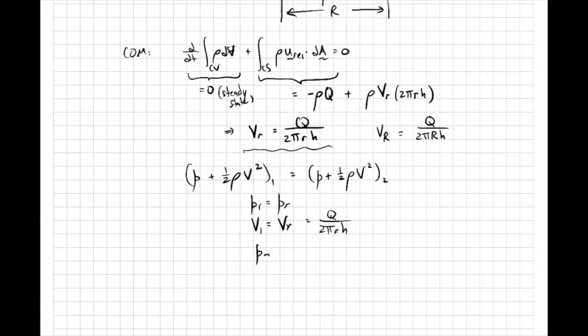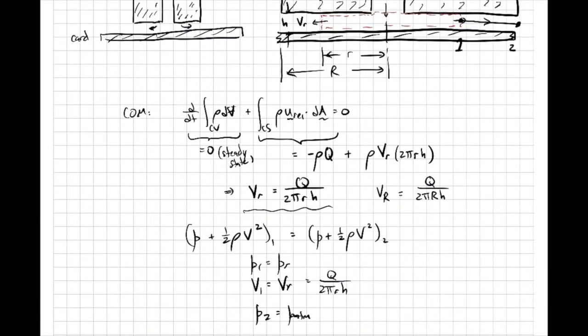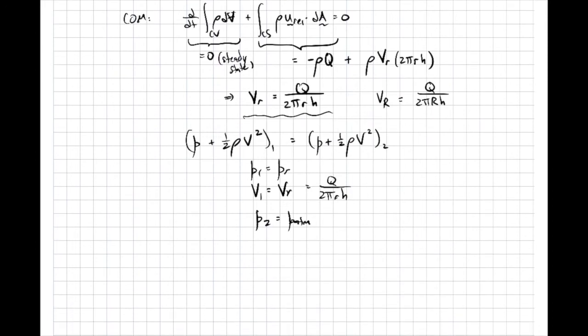Pressure at 2 is going to be atmospheric pressure because it's the pressure right at the edge of the spool of thread. So that'll just be out at atmospheric pressure. And the velocity there, V2, will be the velocity at capital r, which I worked out a moment ago, 2 pi capital r h.